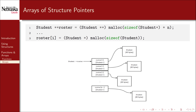Here's the second approach: an array of student pointers, similar to how we created an array of strings. The difference is that each pointer points to a single dynamically allocated structure rather than a row of integers. Since each one is dynamically allocated separately, they're not guaranteed to be stored contiguously in memory. This can be a drawback if memory fragmentation is an issue.